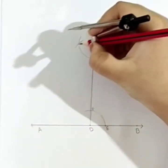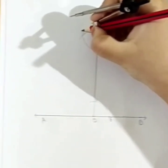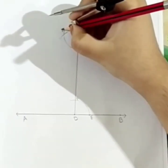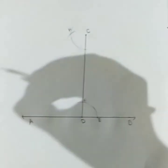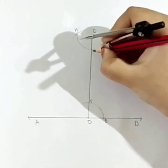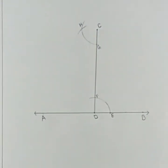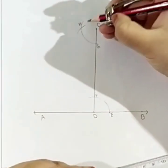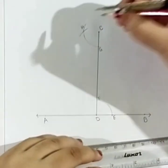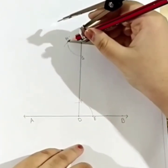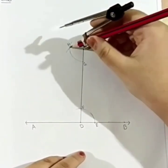Now, we will name it as H. This can be named as G. Now, here we get a point. Now, we will join these two points.